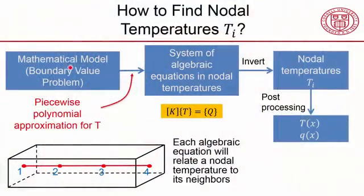An important thing to consider is how to reduce the error in the finite element solution. To be able to understand that, let's go back to a slide that I showed earlier. I talked about how one can go from a boundary value problem to a system of algebraic equations and nodal temperatures using the piecewise polynomial approximation for the temperature.